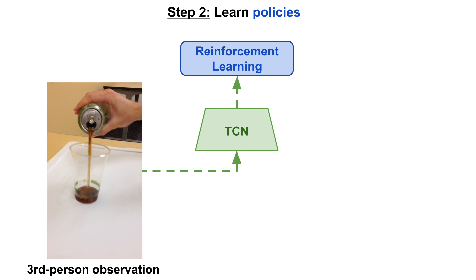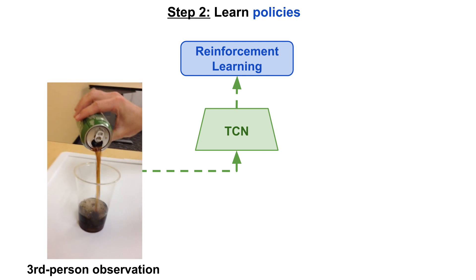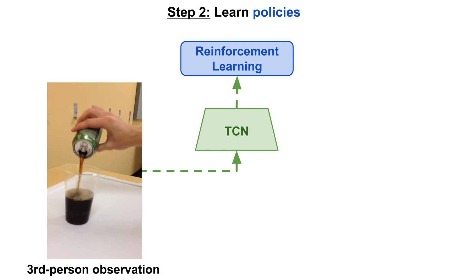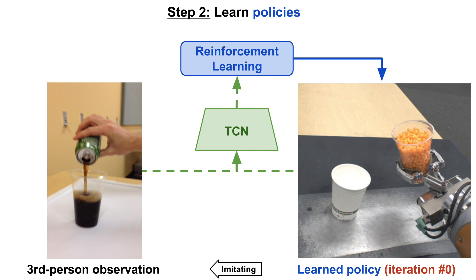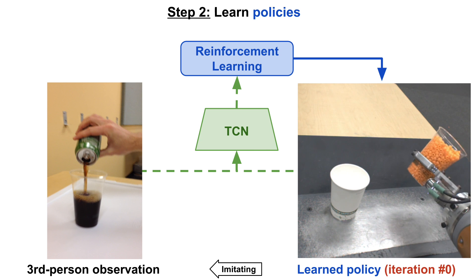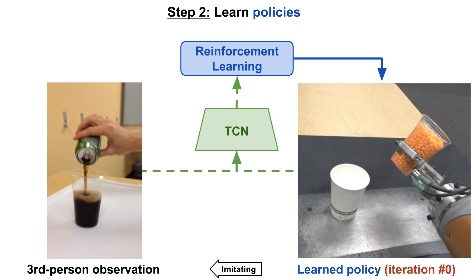The second step of our approach is to use reinforcement learning to learn policies on top of TCN embeddings. Given a single third-person human demonstration, a reward function is constructed. That function rewards following the progression of the video at the semantic level.